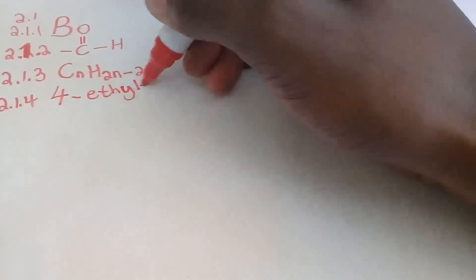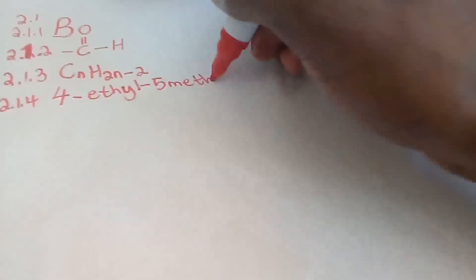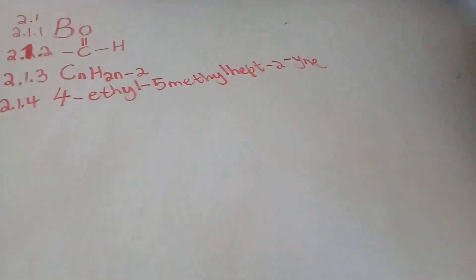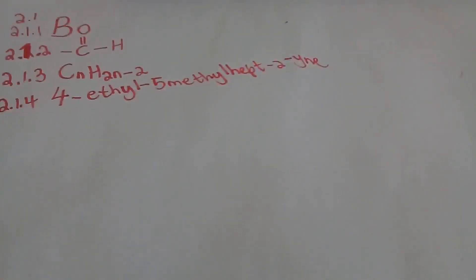So for 2.1.4, the IUPAC name is 4-ethyl-5-methylhept-2-yne. The triple bond is on the second carbon atom, hence 'hept-2-yne'. You can also write it as 4-ethyl-5-methyl-2-heptyne.